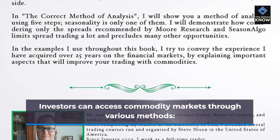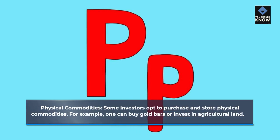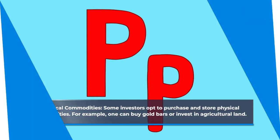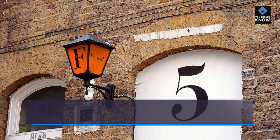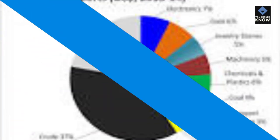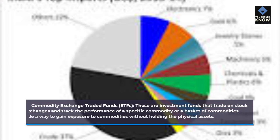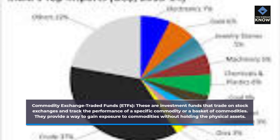Ways to invest in commodities. Investors can access commodity markets through various methods. Physical commodities: some investors opt to purchase and store physical commodities — for example, one can buy gold bars or invest in agricultural land. Futures and options: investing in commodity futures and options contracts allows investors to speculate on the future price of a commodity without owning the physical product. Commodity exchange-traded funds (ETFs): these are investment funds that trade on stock exchanges and track the performance of a specific commodity or a basket of commodities, providing a way to gain exposure to commodities without holding the physical assets.